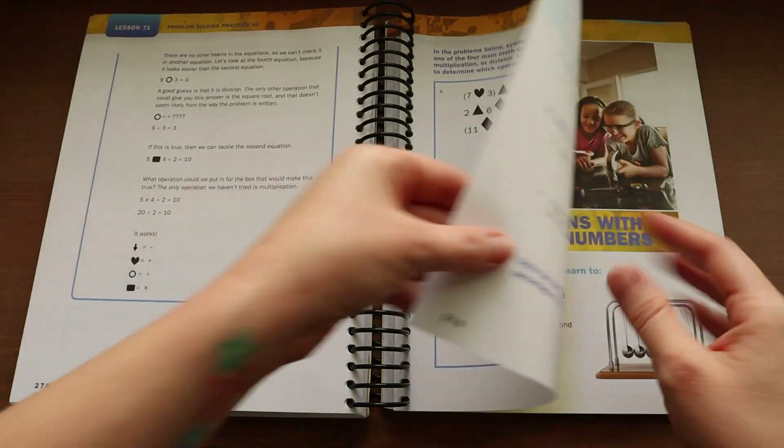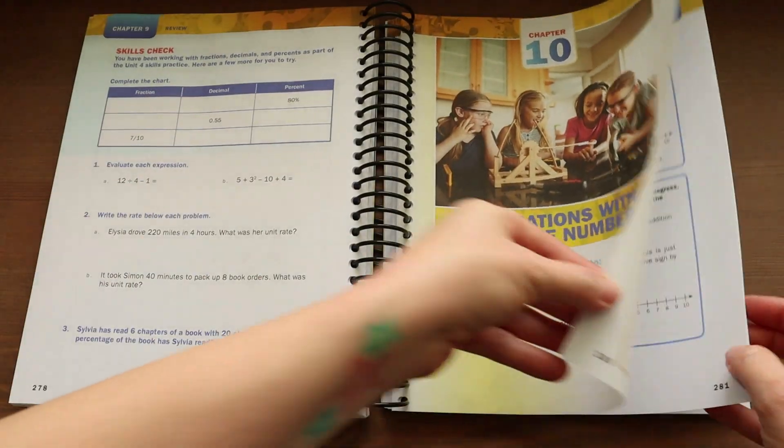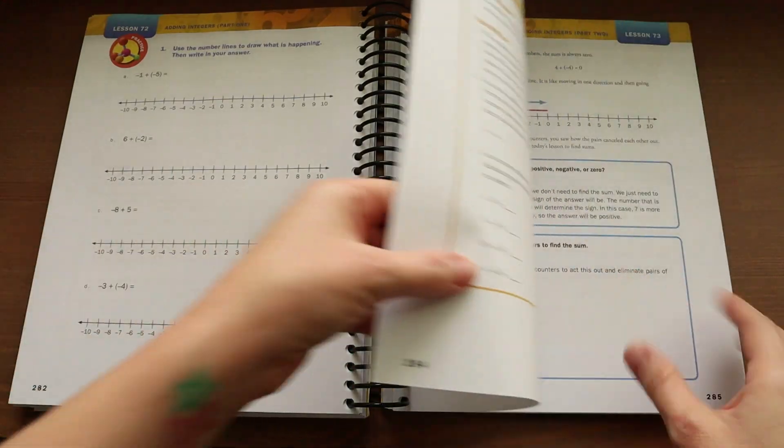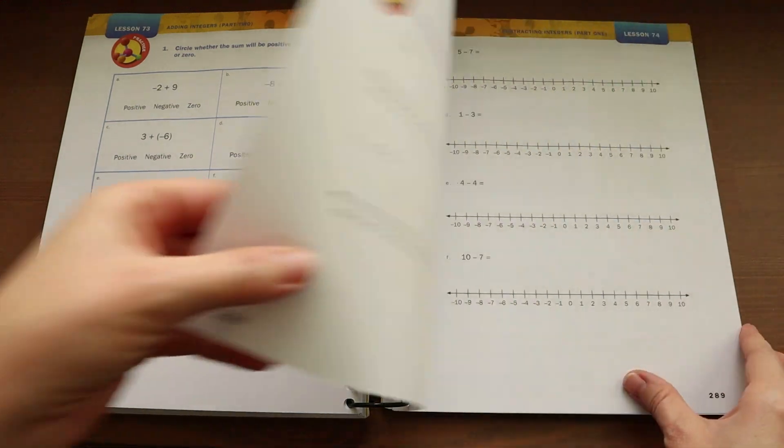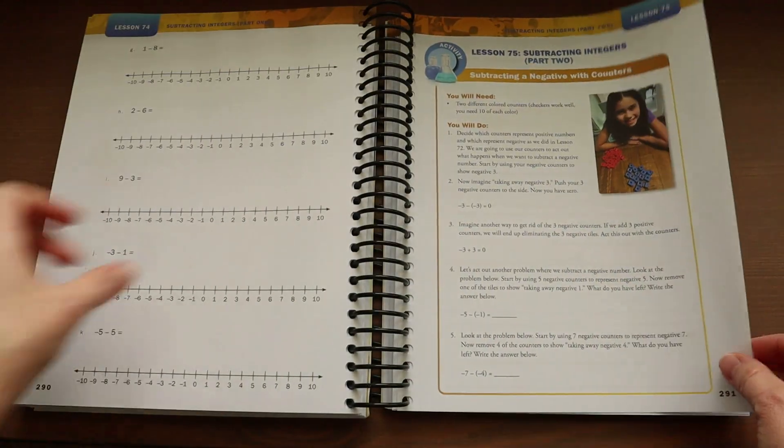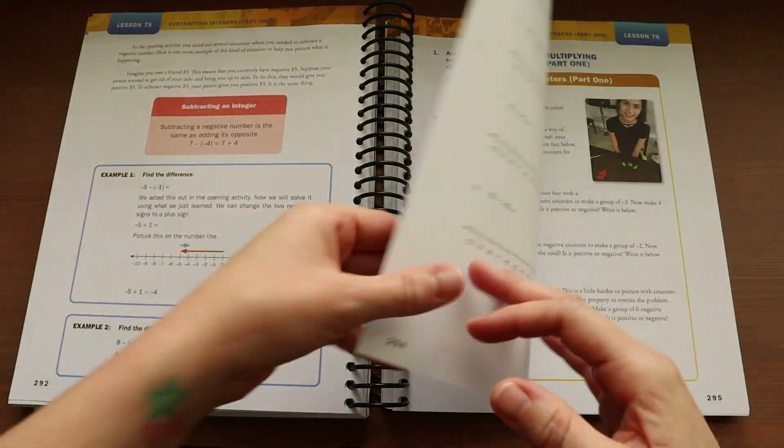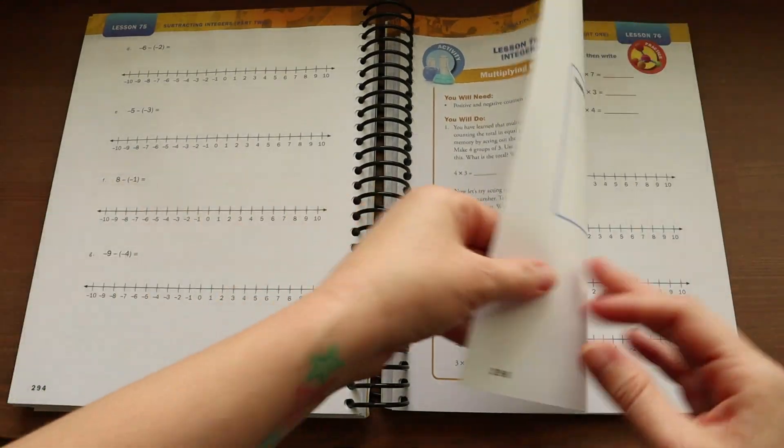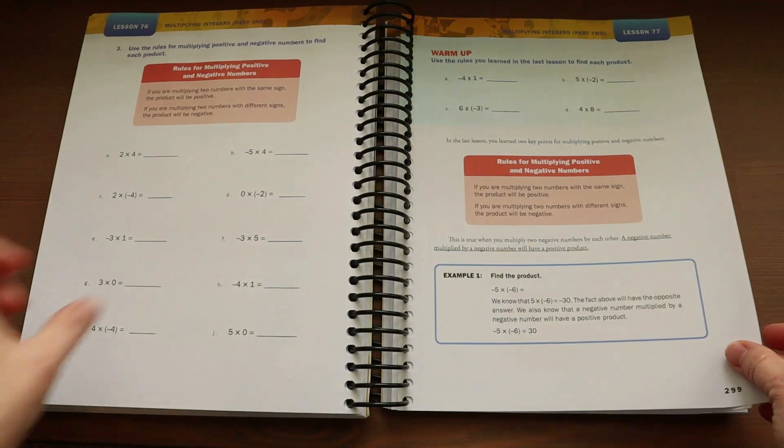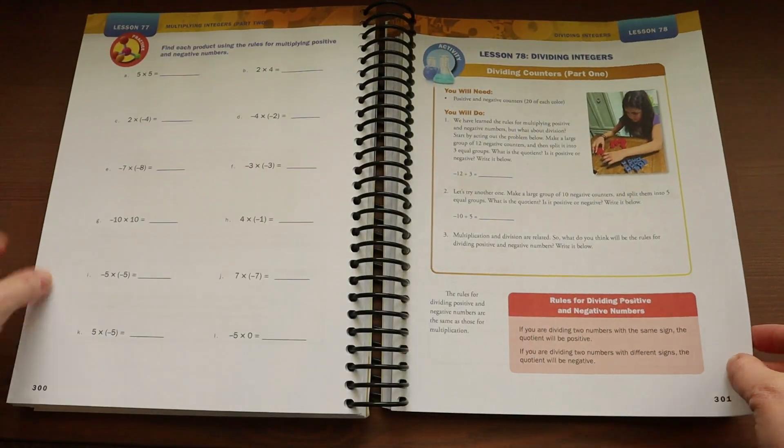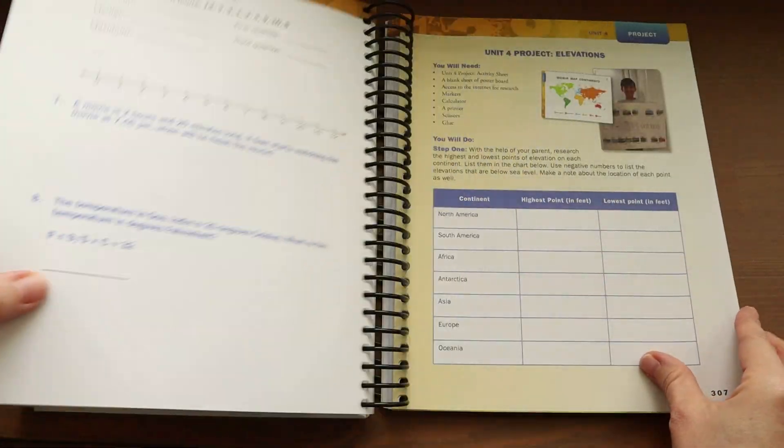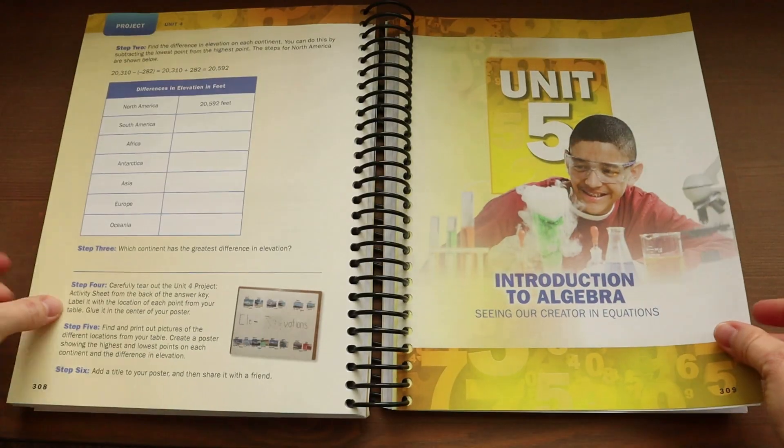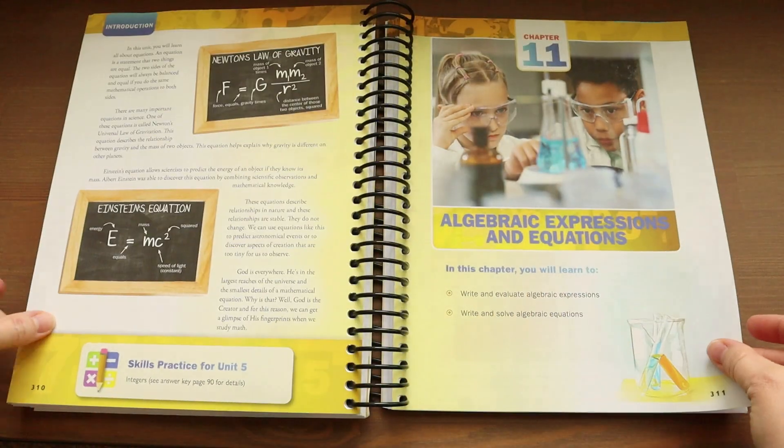Now in the majority of the lessons there will be anywhere from one to three examples for your student to follow and another thing that I really liked is that the problems your child is given independently looks just like the examples that the book is walking your child through and if you guys have been around here for any length in time you know that I have had issues in previous math curriculums where they give a very simple example and then the independent work is more complex.